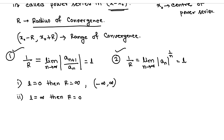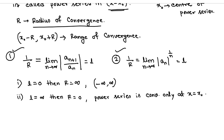If l equals infinity, then R will be 0, and we can say that the power series is convergent only at x equals the center x₀. Since R = 0, there is no radius, so the series converges only at the center x equals x₀.